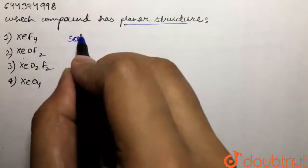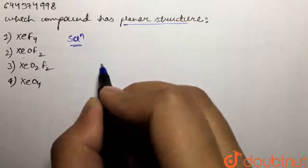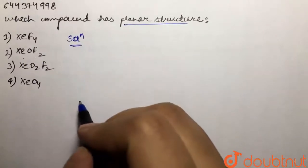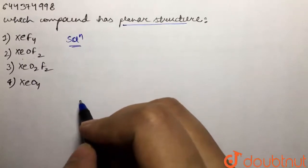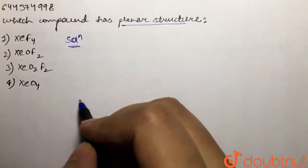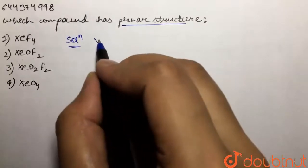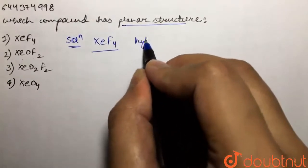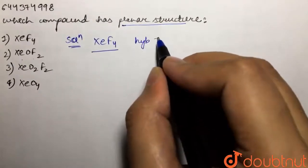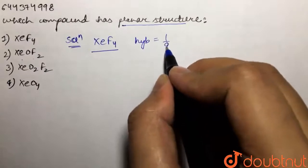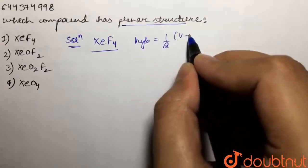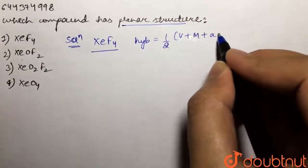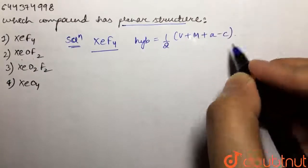We are given four options and we are supposed to tell which of the following has the planar structure. So if we take our first option, we have XeF4. We are going to find out their hybridization or steric number by using the formula: half of (V + M), plus the charge if it's an anion, minus the charge if it's a cation.